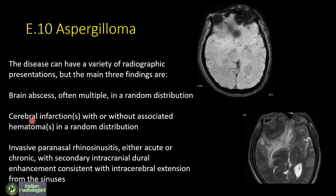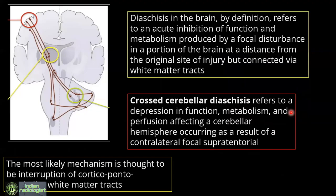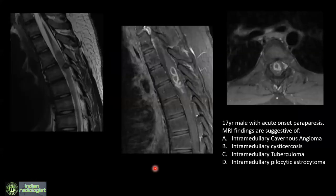Most of you identified this phenomenon correctly as crossed cerebellar diaschisis, also featured in last year's quiz. Seen on ASL non-contrast perfusion, one part of the cerebral hemisphere is hypoperfused and the contralateral cerebellar hemisphere is also hypoperfused. This refers to depression in function, metabolism, and perfusion of the cerebellar hemisphere occurring as a result of a contralateral focal supratentorial abnormality. This patient had status epilepticus, and the phenomenon is due to interruption of the corticopontocerebellar white matter tract.